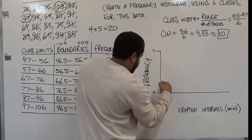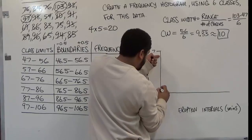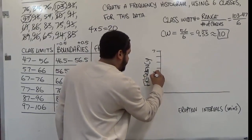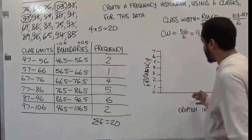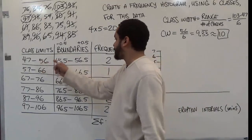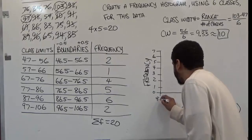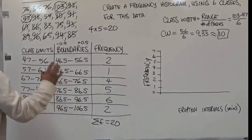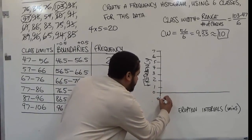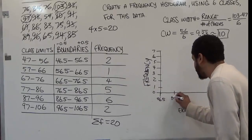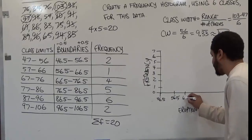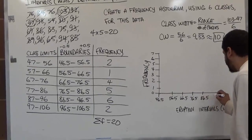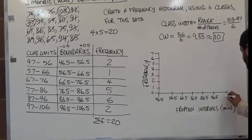On the y-axis we have the actual frequency for each value, going up to seven. On the x-axis we mark the boundaries: forty-six point five, fifty-six point five, sixty-six point five, seventy-six point five, eighty-six point five, ninety-six point five, and finally one hundred and six point five.